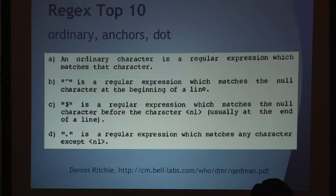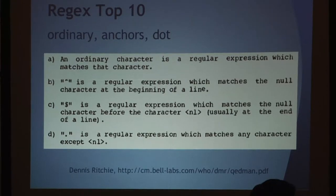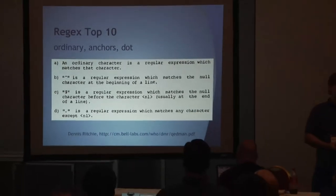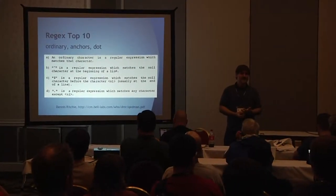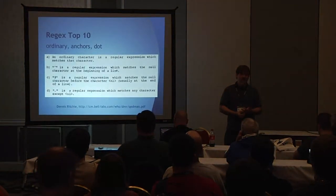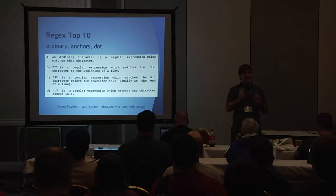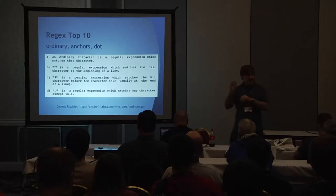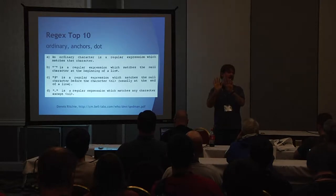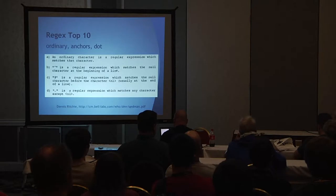So right here we've got the fundamentals: regular characters match themselves, caret matches the beginning, dollar matches the end, dot matches any character. A question about caret - we're not talking about a real null character. We're talking about a logical beginning of line. You can think of caret matching that spot between a newline character and the first non-newline character, and dollar matching the spot between the last character and the newline. It's a pseudo-null.